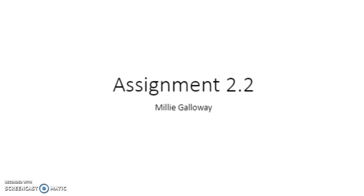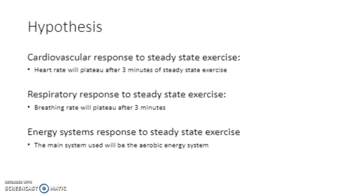Assignment 2.2, Part 2, by Millie Galloway. In this assignment, we predicted what heart rate, breathing rate, and energy systems did during steady-state exercise. We conducted an experiment which required 20 minutes of exercise on an exercise bike, and tested to see how the body reacted. Steady-state exercise is the balance between the energy required by the working muscles and the rate of oxygen circulating the body to get to the muscles.